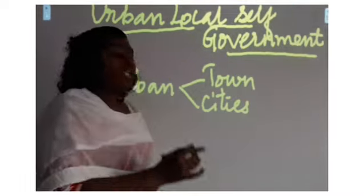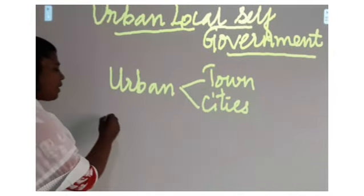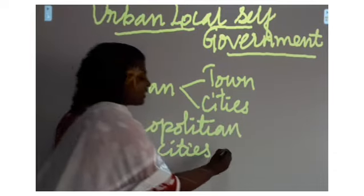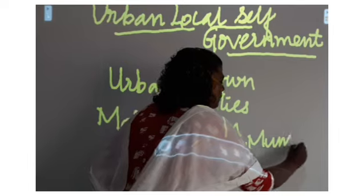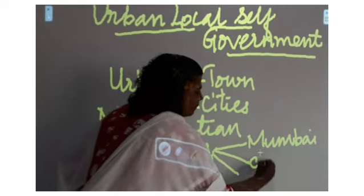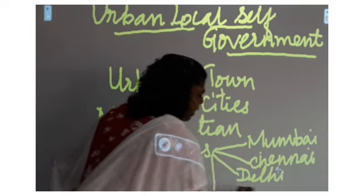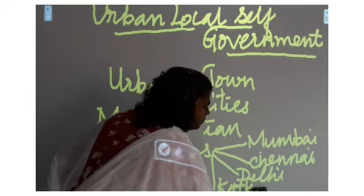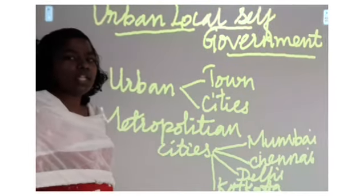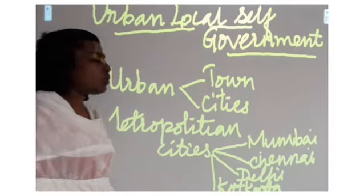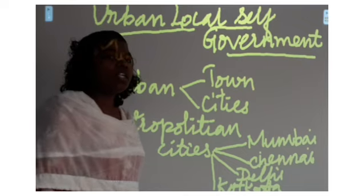When we see India, there are four important metropolitan cities. What are the cities that come under the metropolitan cities? There are four important cities: Mumbai, Chennai, Delhi, and Kolkata. These are the four important metropolitan cities found in India. Metropolitan cities are the big and important cities in India.